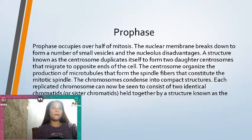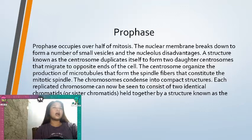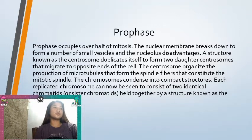Next is prophase. Prophase occupies over half of mitosis. The nuclear membrane breaks down to form a number of small vesicles and the nucleolus disappears. A structure known as the centrosome duplicates itself to form two daughter centrosomes that migrate to opposite ends of the cell. The centrosome organizes the production of microtubules that form the spindle fiber that constitutes the mitotic spindle.